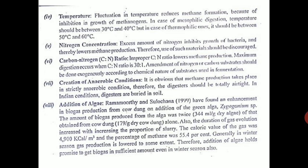To improve biogas formation, some algae can be added. This is a new development. Ramamurti and Suloshana found the enhancement of biogas production from cow dung on addition of green algae Zygogonium. The amount of biogas produced from the algae was twice that obtained from cow dung alone. If you add algae it produces more biogas, and the duration of gas evolution also increased with the increase in the proportion of slurry.